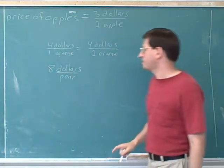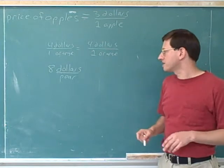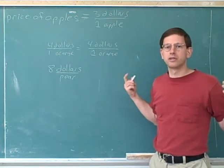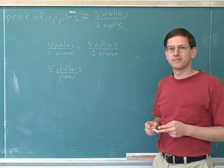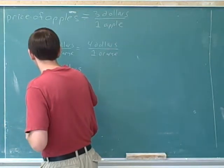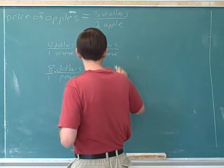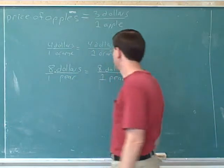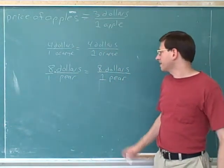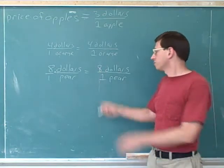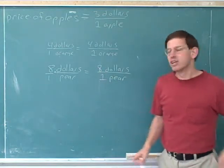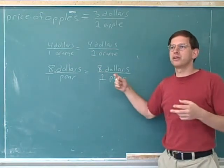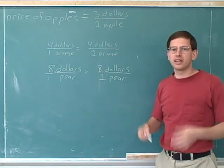Here we have some pears that cost eight dollars per pear — very expensive fruit. Please try to combine both the number and the units here into a single ratio. This gives us eight dollars for one pear. Even though it's not mathematically necessary to keep the number one on the bottom, we want to keep it to help our intuitive understanding. It's pretty easy to take any expression with a number and a ratio unit and combine them into a single ratio.